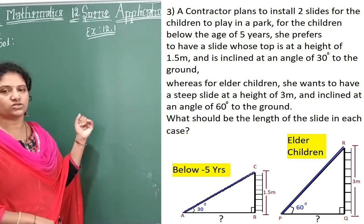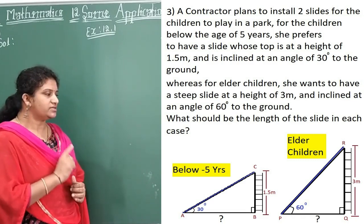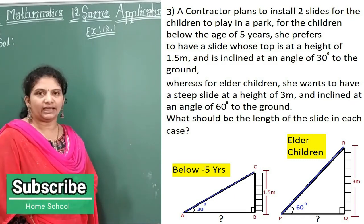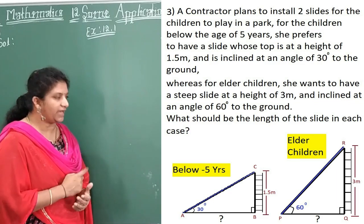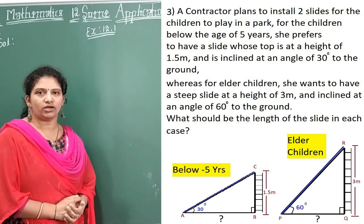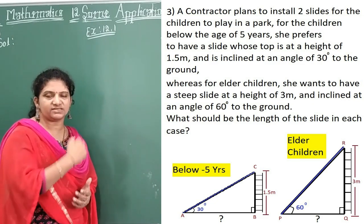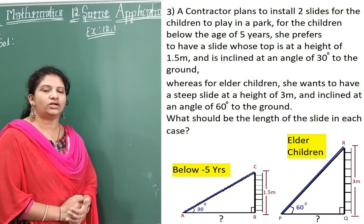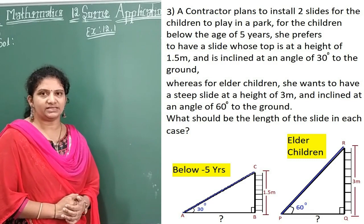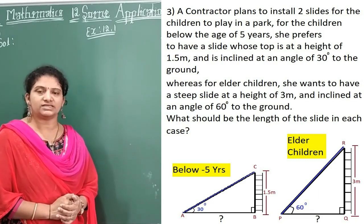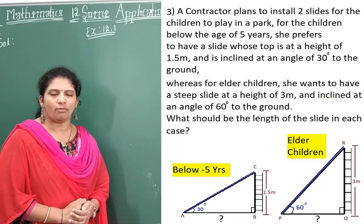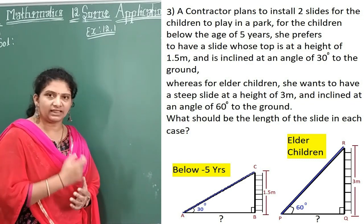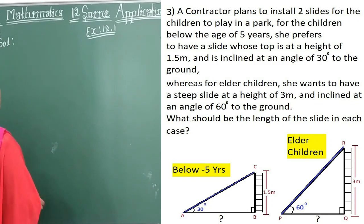One more thing to observe: this is a right-angled triangle. The height means the opposite side, and the slide length is the hypotenuse. We are talking about opposite and hypotenuse, so the ratio is sin theta. Sin theta is equal to opposite by hypotenuse. Using that ratio, we are going to find the slide length.